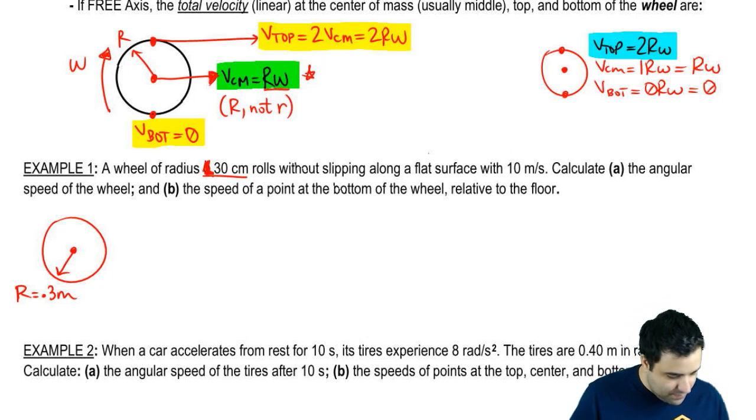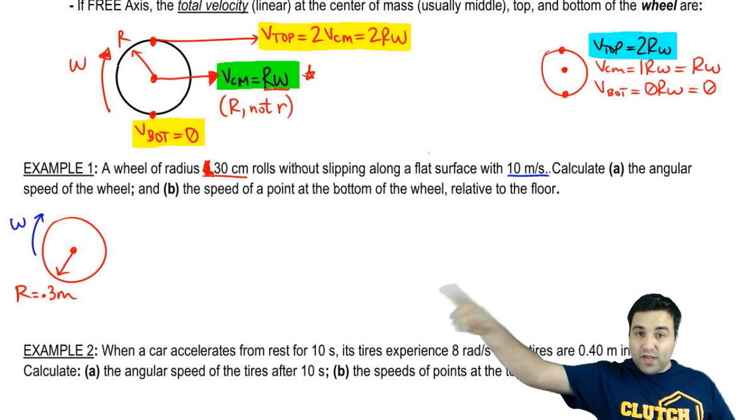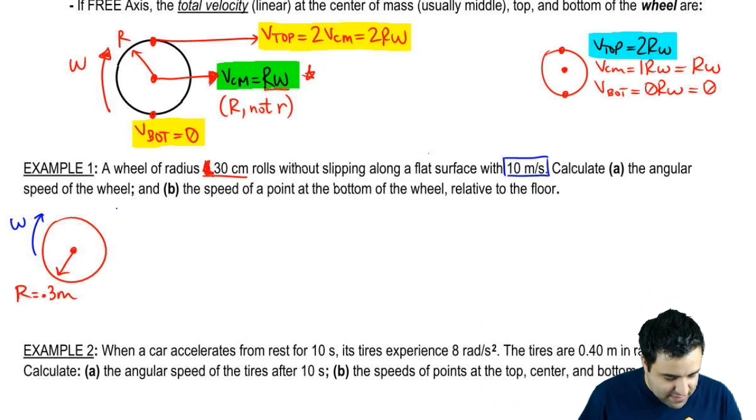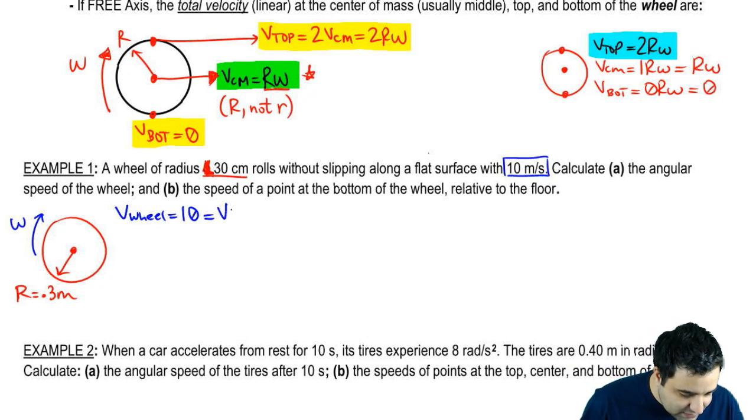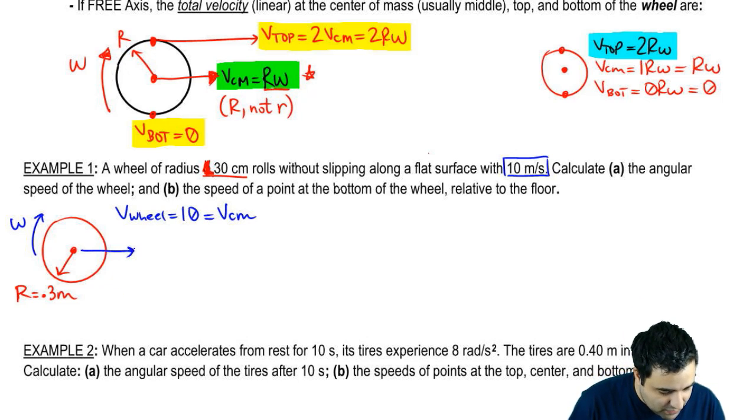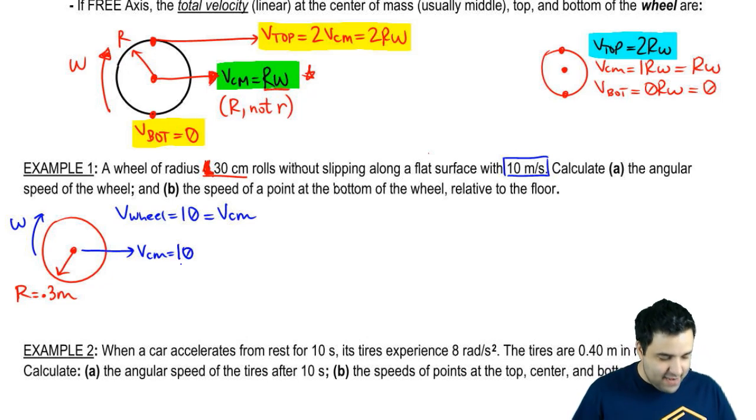So it rolls without slipping. So if it rolls, it has a W. And it rolls with 10 meters per second. So the wheel is actually moving. When I give you a velocity here, when I say that V wheel is 10, I'm giving you the velocity of the center of mass of the wheel. So this velocity here, V center of mass equals 10. Now, there's something interesting here that we need to talk about. It says rolls without slipping.